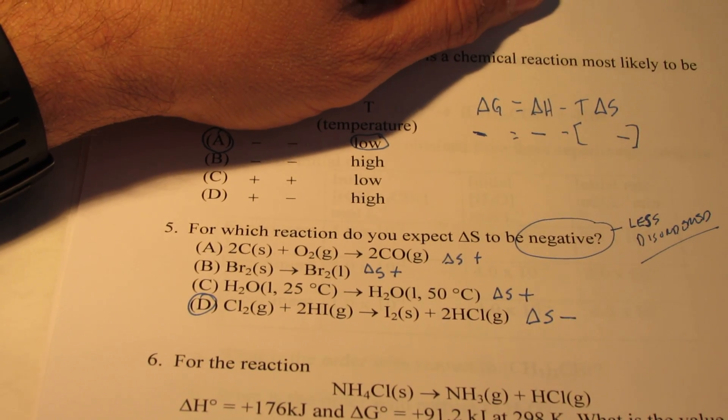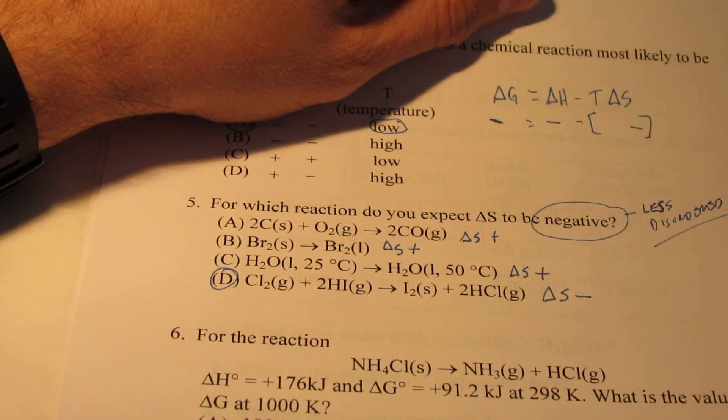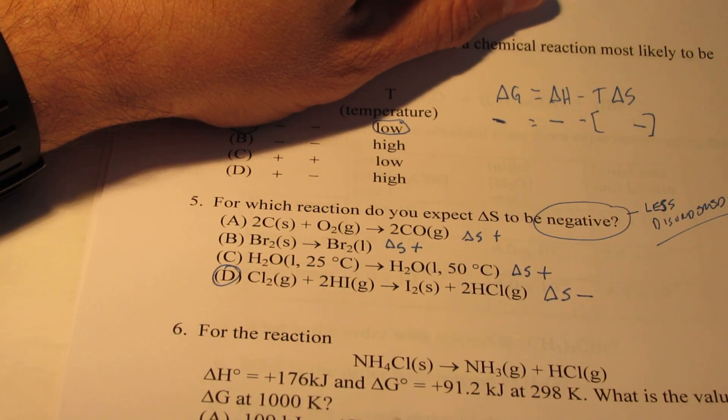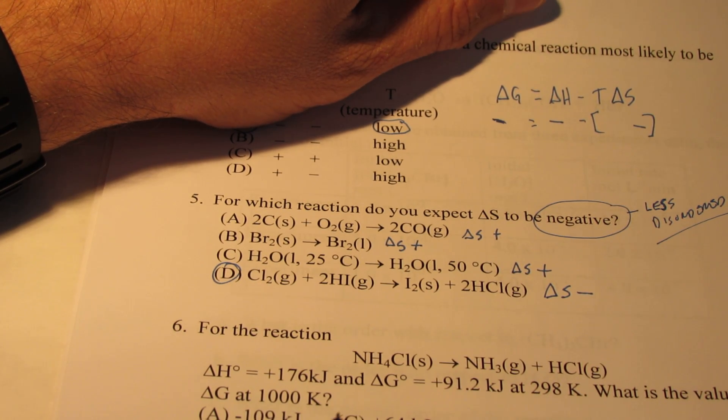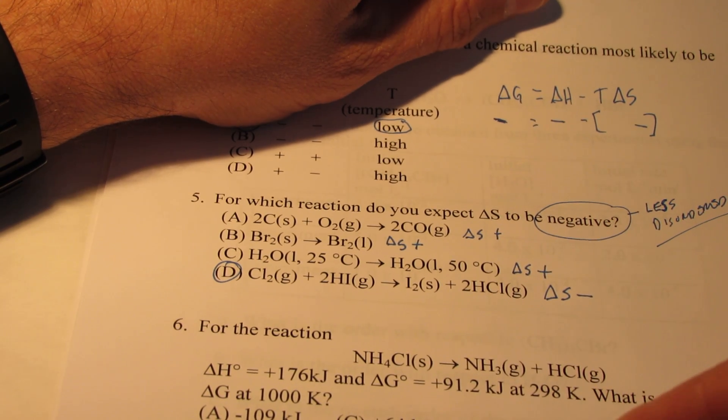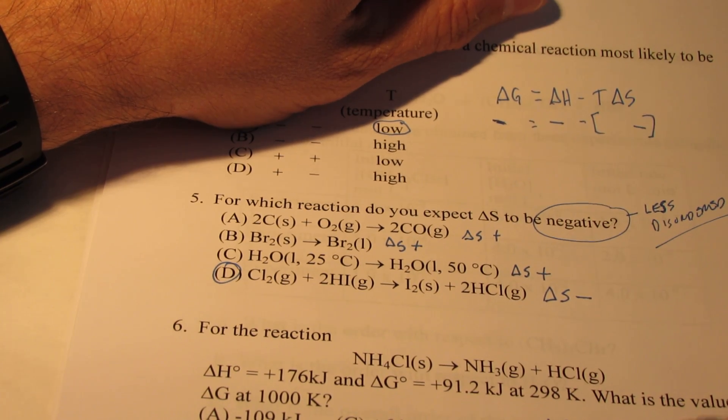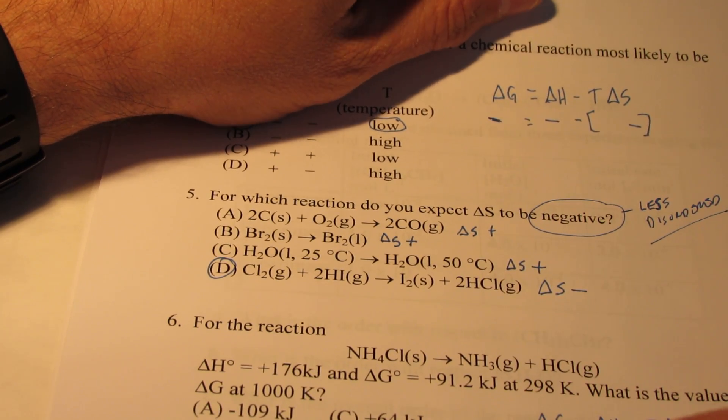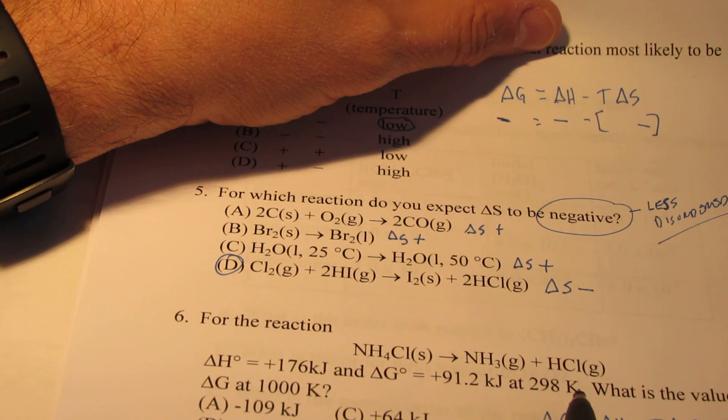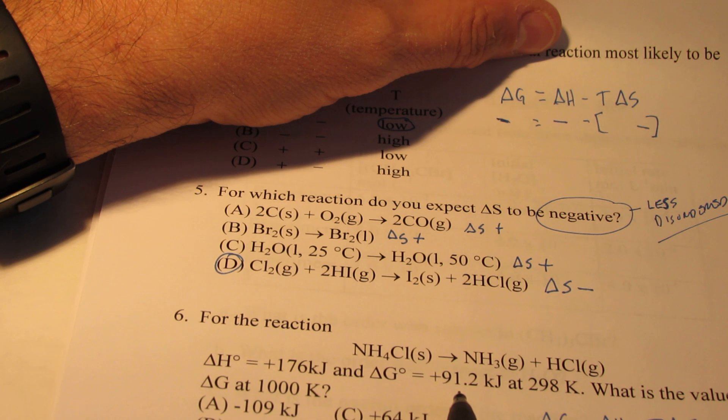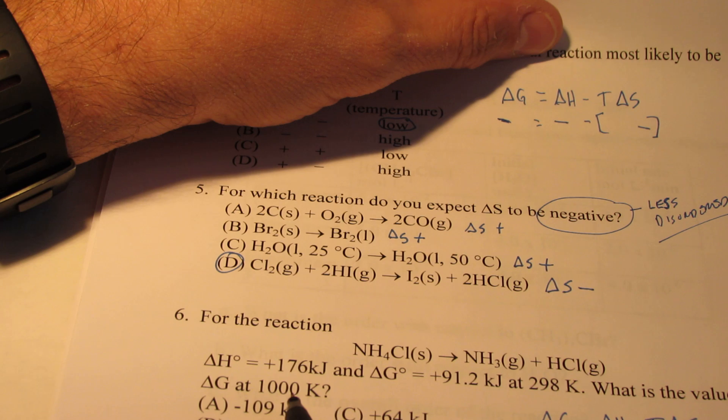Now just a heads up, number six will be a bit more difficult than what I would give you on the test. I thought I would throw it in here though just for fun. It is a multiple choice question, so don't let that fool you too much. This is using the Gibbs-Helmholtz equation. Delta G equals Delta H minus T Delta S. And what we're going to do is find the value of Delta G at two temperatures. At 298 it's positive 91.2. And we want to know what that would be at a thousand Kelvin.